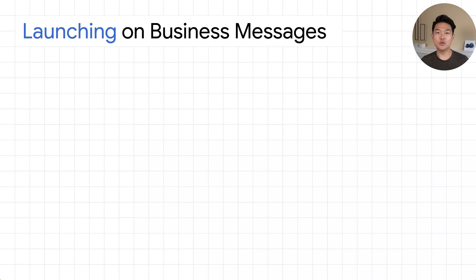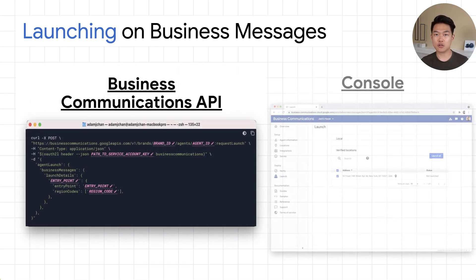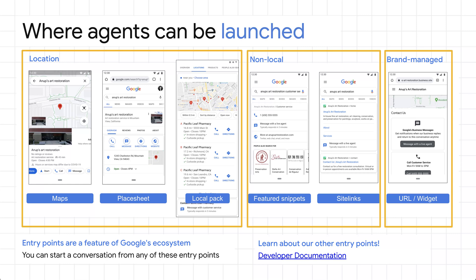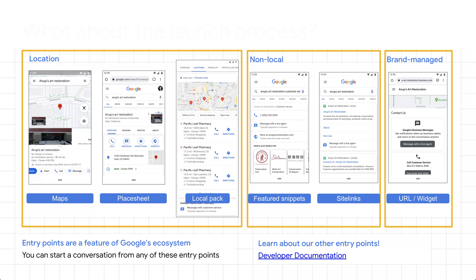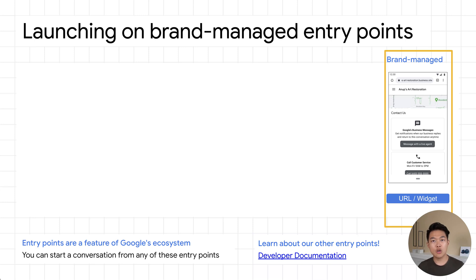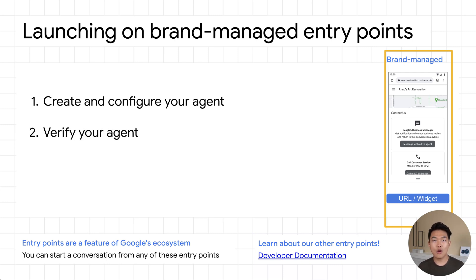The launch process is simple. You initiate a launch request using the business communications API or through the business communications developer console. You can launch agents and locations separately. If you want to launch on a brand-managed entry point, you need to create a business messages agent, ensure it has an entry point configuration, and then initiate a verification request on the agent. Once in a verified state, you can place the URL entry point anywhere a brand desires, or convert the URL into a QR code and place it onto a physical location.